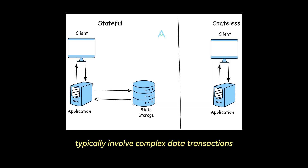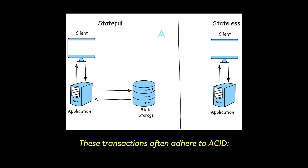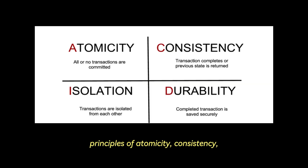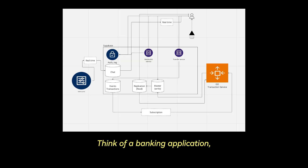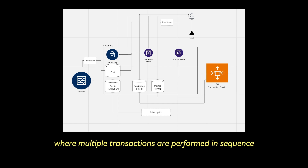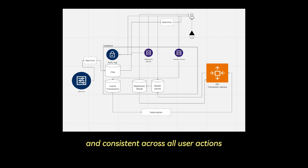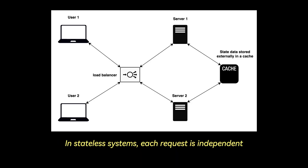Stateful systems typically involve complex data transactions where consistency is crucial. These transactions often adhere to ACID principles — atomicity, consistency, isolation, and durability — which ensure data integrity and reliability. Think of a banking application where multiple transactions are performed in sequence. ACID compliance ensures these transactions are accurate and consistent across all user actions within the session.